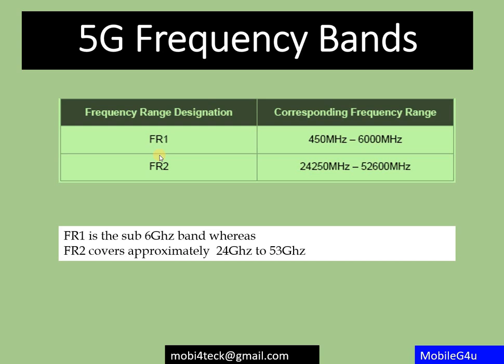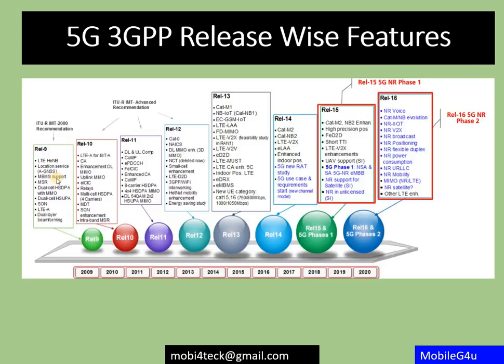In 5G, the frequency range has been divided into FR1 and FR2. FR1 covers 450 MHz to 6000 MHz — also called Sub-6 GHz. FR2 covers 24 GHz to 52.6 GHz, which is the millimeter wave range. That is how 5G frequency bands are divided into FR1 and FR2.